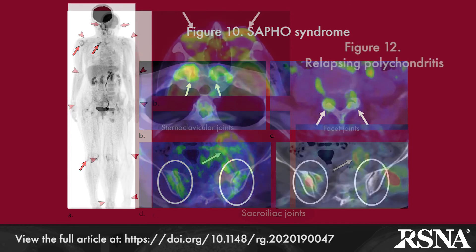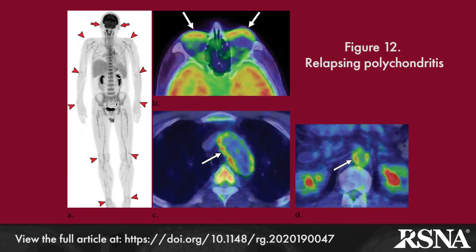A series of miscellaneous systemic disorders with arthropathy are then reviewed. These include relapsing polychondritis, which is characterized by inflammation of cartilaginous and proteoglycan-rich structures, such as the auricular cartilage, joints, skin, and cardiovascular and laryngotracheal structures.